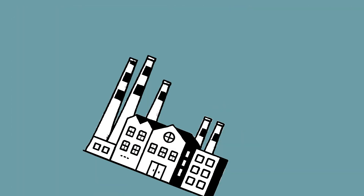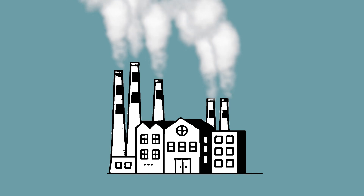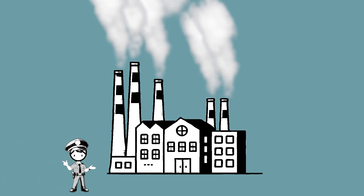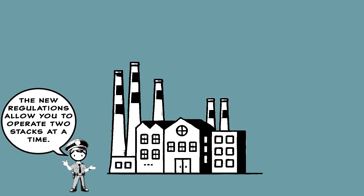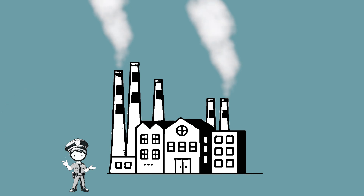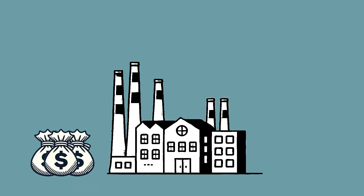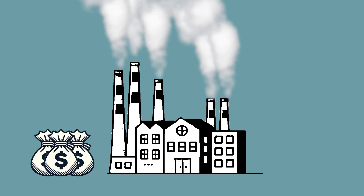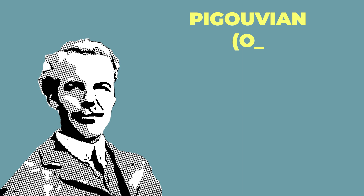So how do we address negative externalities like, say, factory smoke? Regulation is a traditional answer. Regulation may limit or stop the harmful activity, so maybe the factory owner is allowed to emit a certain amount of smoke, or maybe they're told to stop altogether. Alternatively, we might charge a fee to the factory owner that reflects an estimate of the harm caused by the smoke. This is sometimes called Pigouvian taxation.